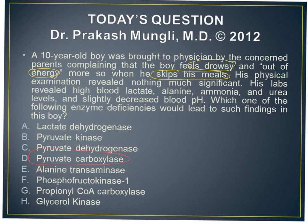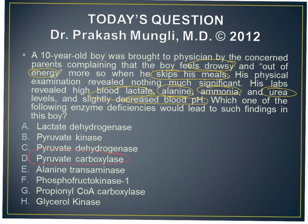His physical examination revealed nothing significant. His labs revealed high blood lactate levels, high levels of alanine, increased blood ammonia, increased urea levels, and a decrease in blood pH. We need to determine which enzyme is deficient. The decrease in blood pH can be correlated with lactic acidosis, since there is an increase in lactate.